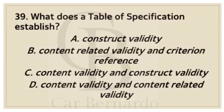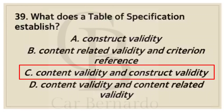Number thirty-nine: What does a table of specification establish? Letter A: Construct validity. Letter B: Content-related validity and criterion reference. Letter C: Content validity and construct validity. Letter D: Content validity and content-related validity. Answer: Letter C, Content validity and construct validity.